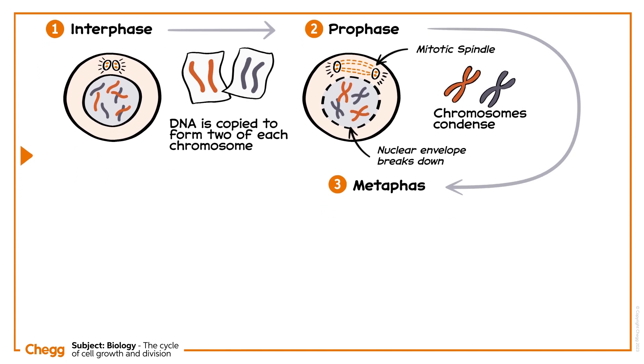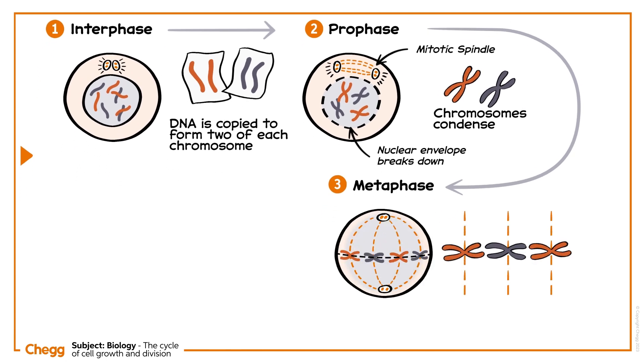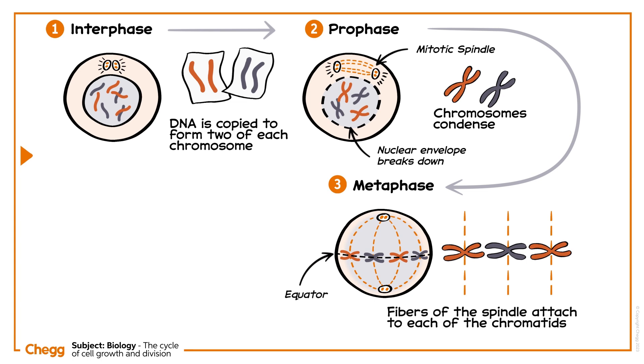Metaphase comes next. Chromosomes and their copies line up along the equator of the cell. The fibres of the spindle attach to each of the chromatids.